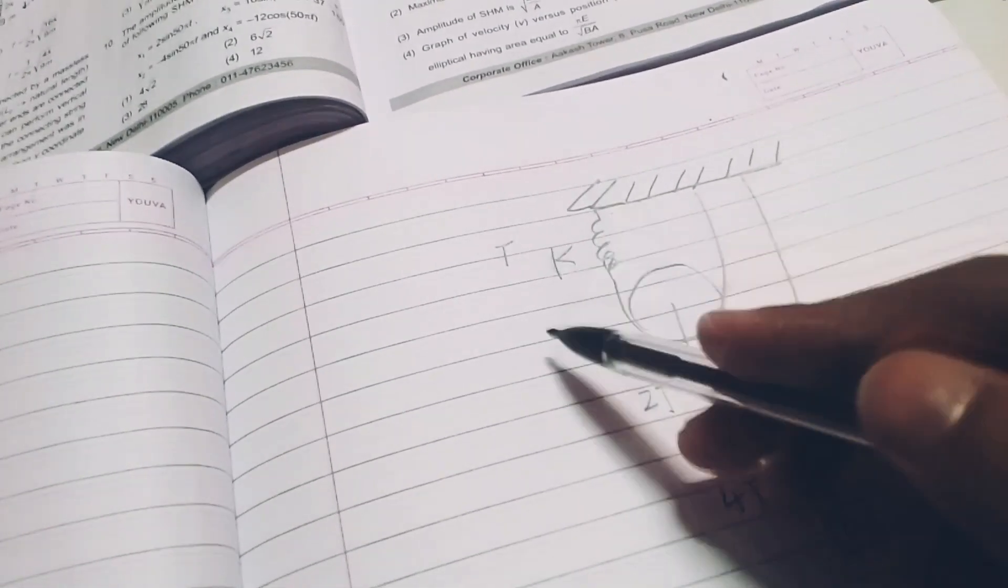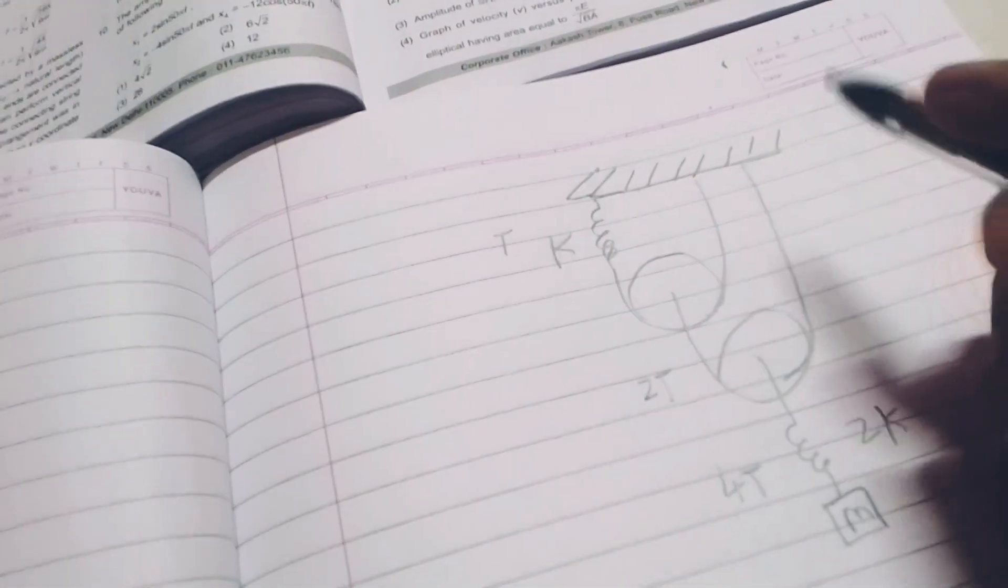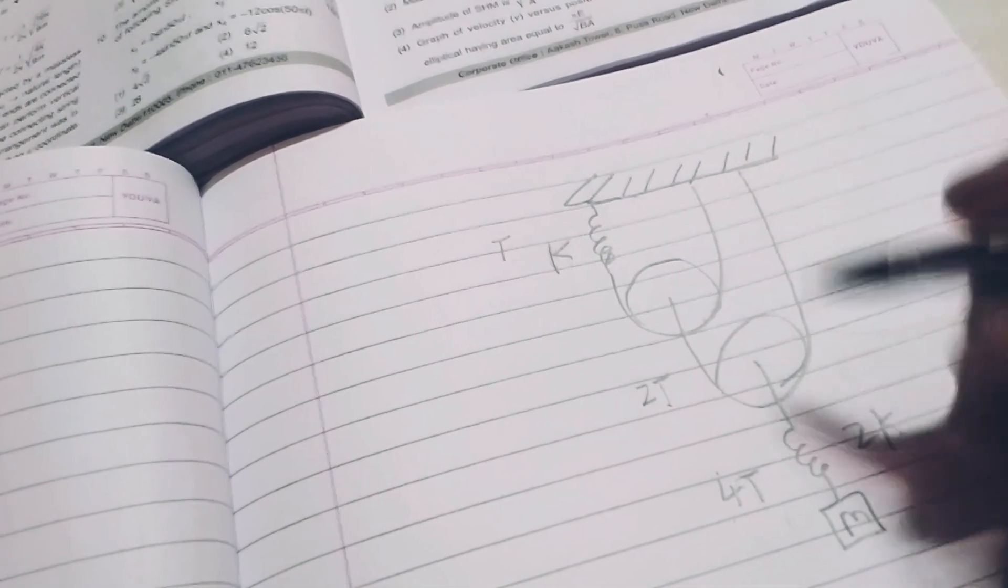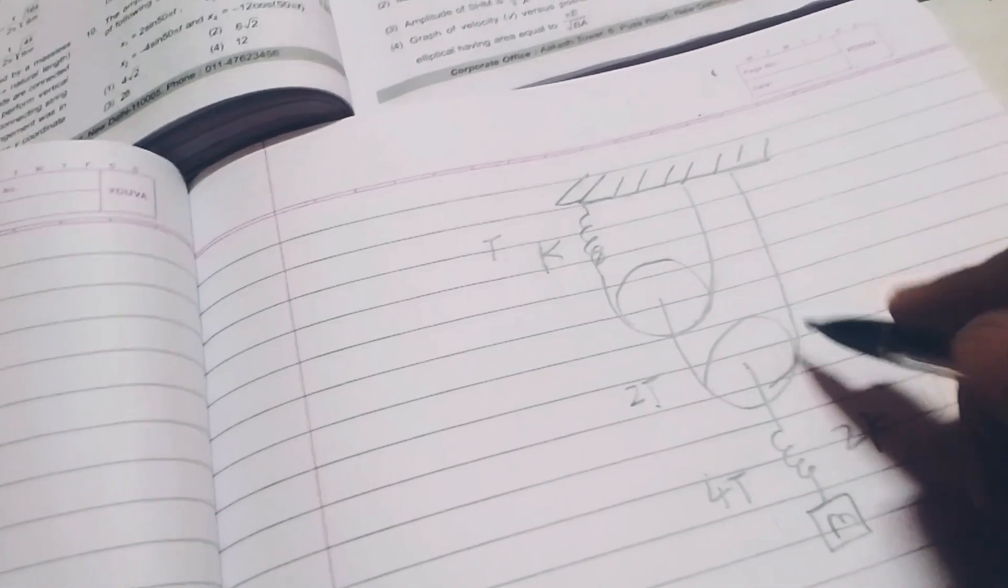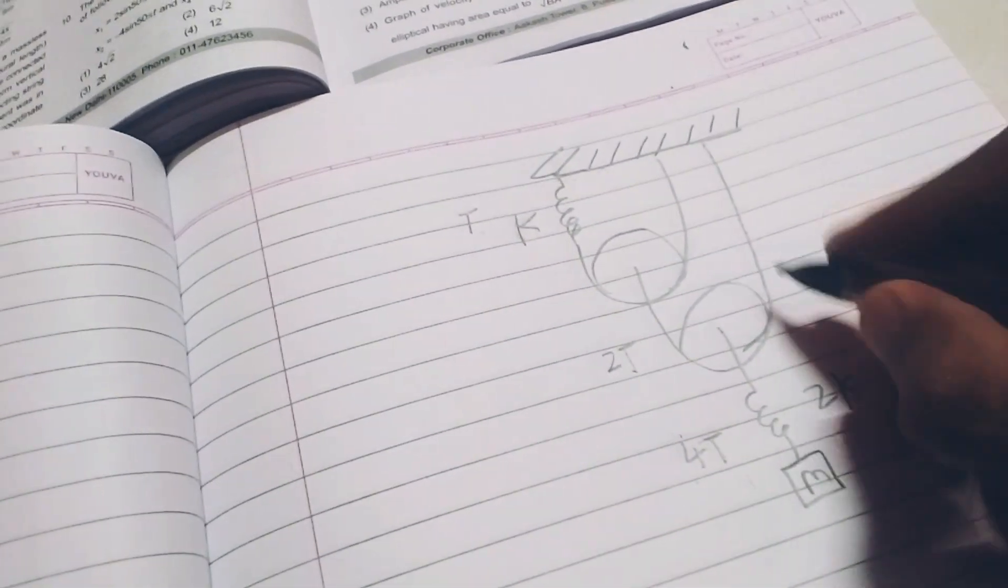If I take here capital T then it will be T by 2 here and T by 4 here. Thus, I would be getting into fractional values of T that I don't want to get into because it will make complicated calculations. I just want to keep it simple.